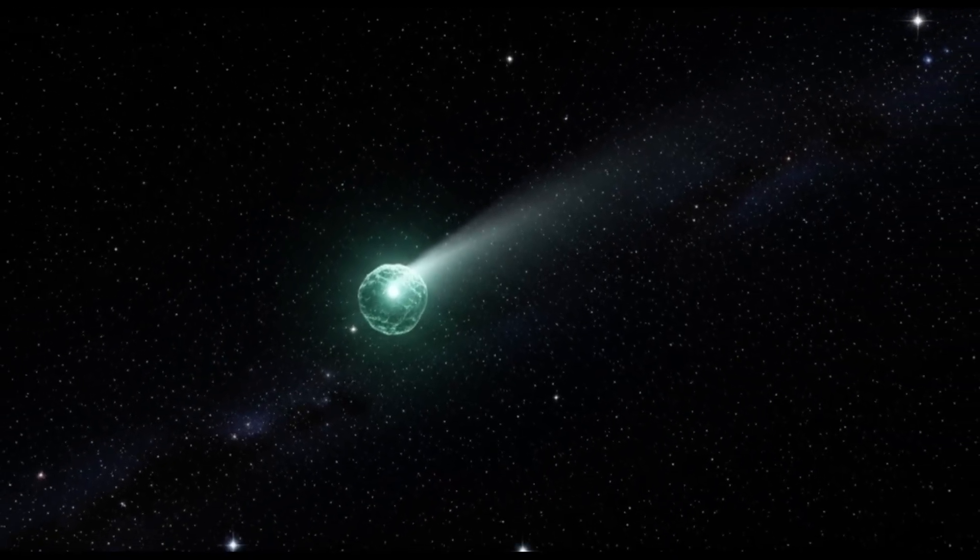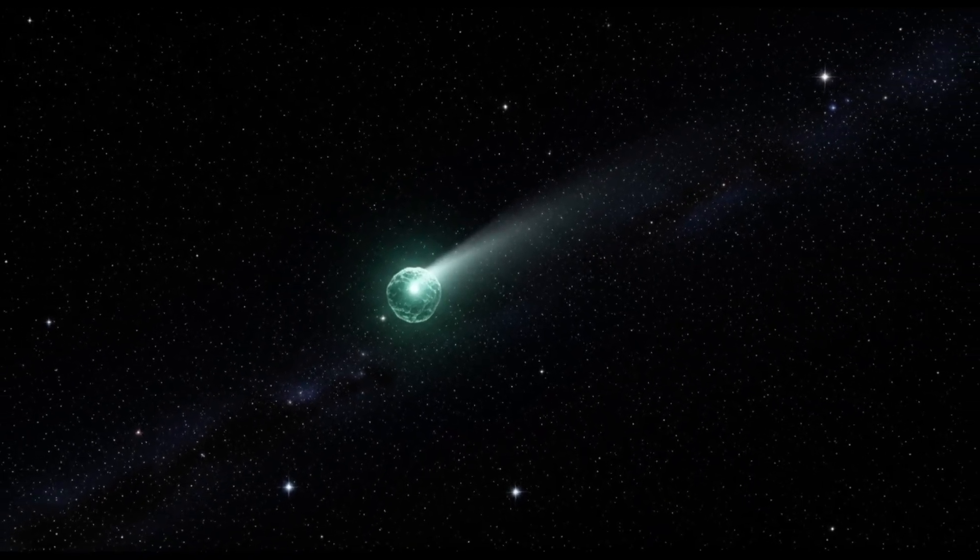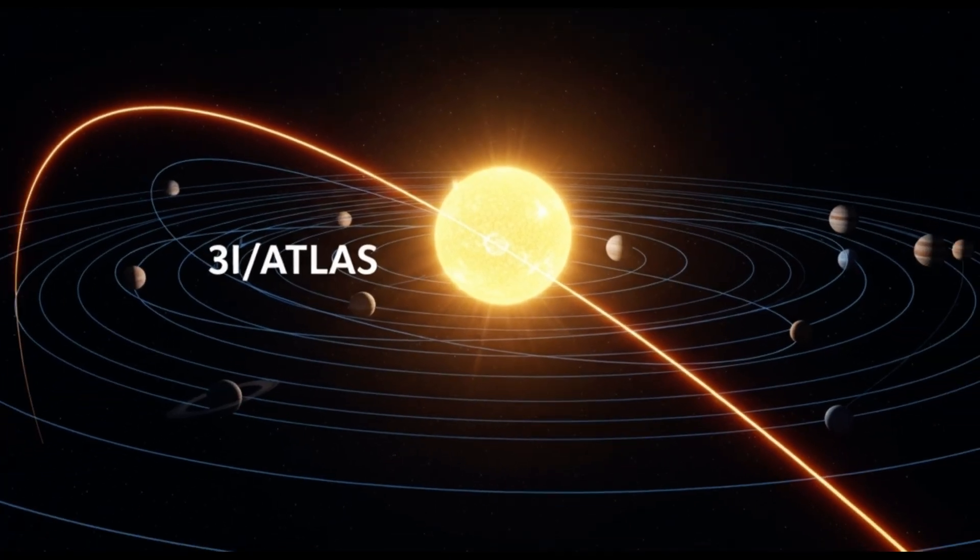In the vast darkness of space, a mysterious object is tumbling through our solar system. It's called 3I/ATLAS, and it's not from around here.